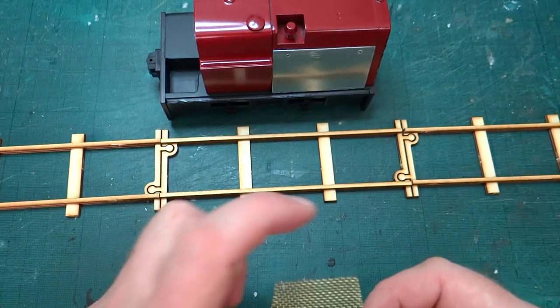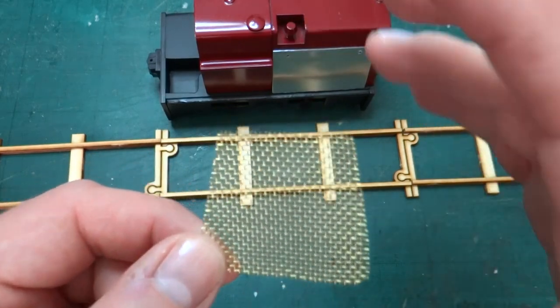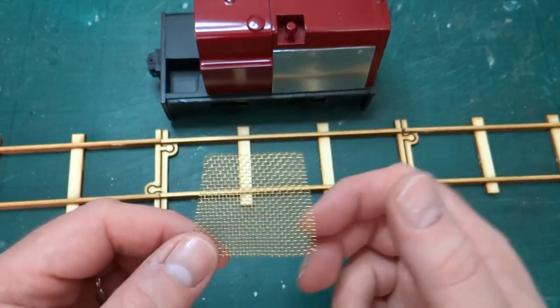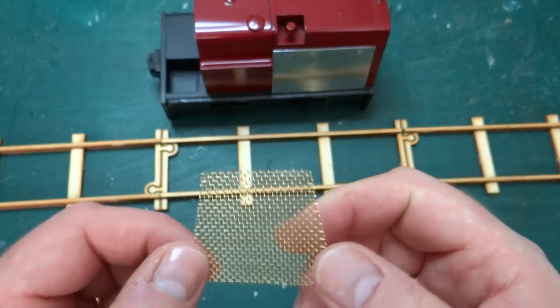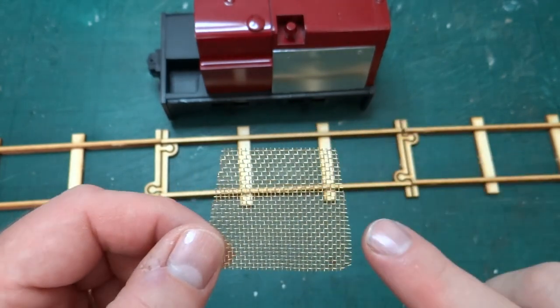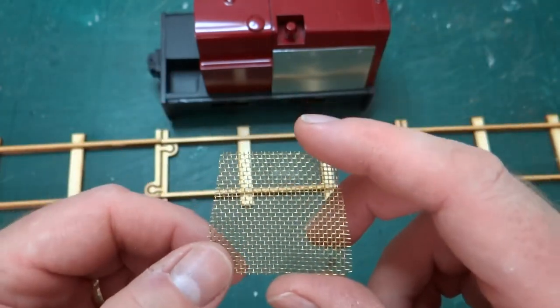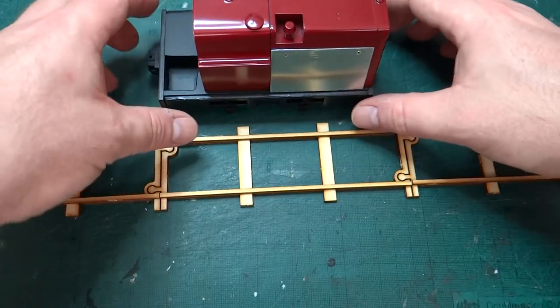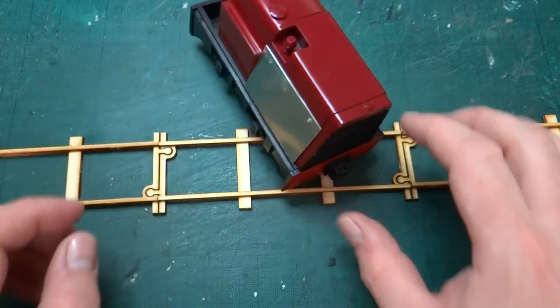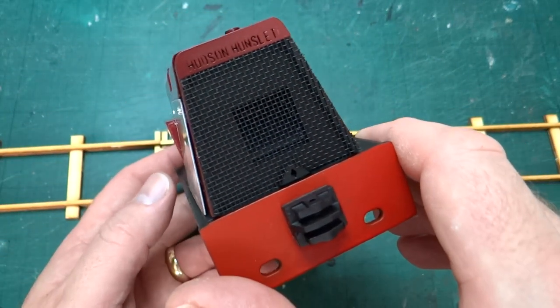In the end what I did was I actually cut a slightly bigger rectangle piece and sprayed it black first, then cut it and then sprayed it again. The idea being that first spray of paint was hopefully holding all the wires in place so they couldn't move around quite so much as I was cutting it. That worked on the first attempt, so that's now the one that's glued in place on the front.